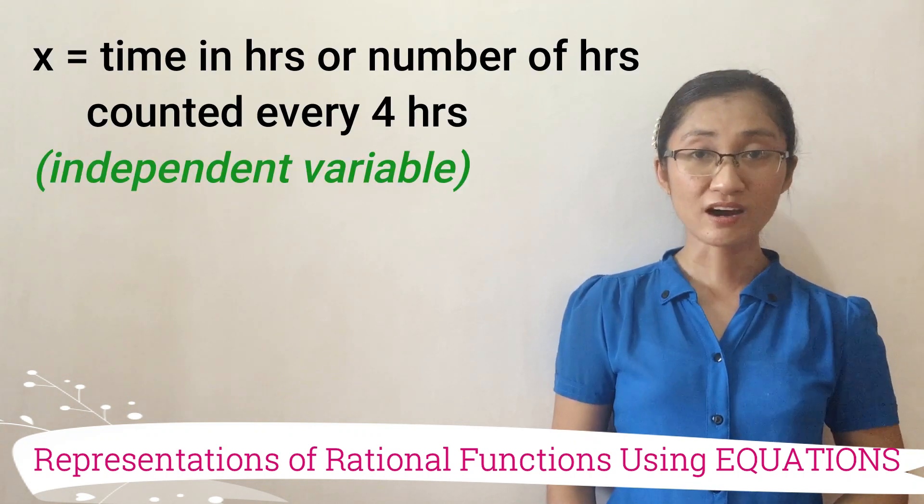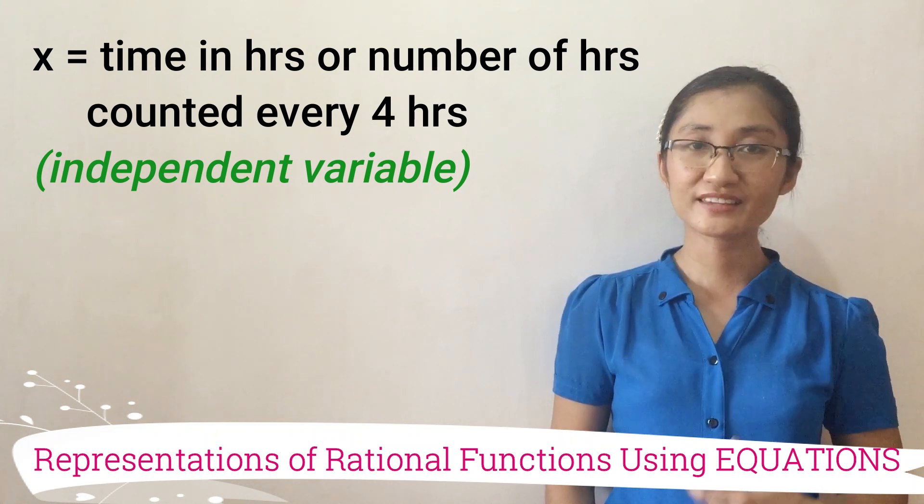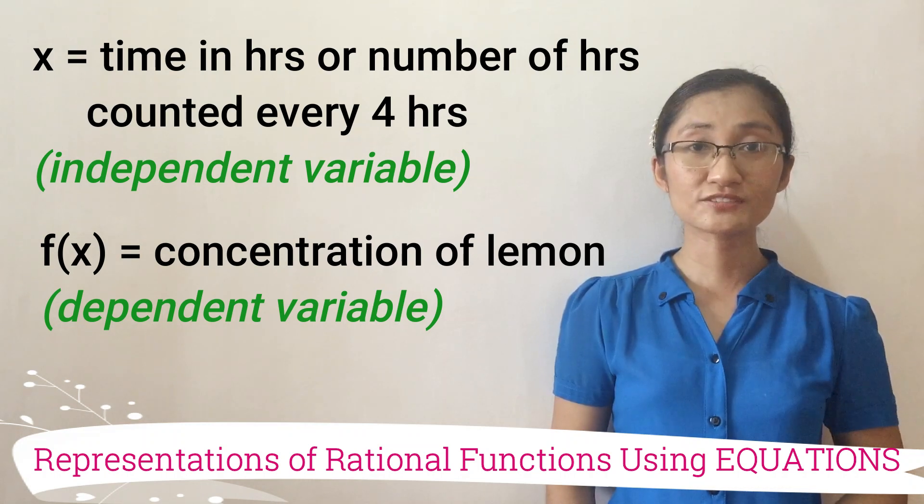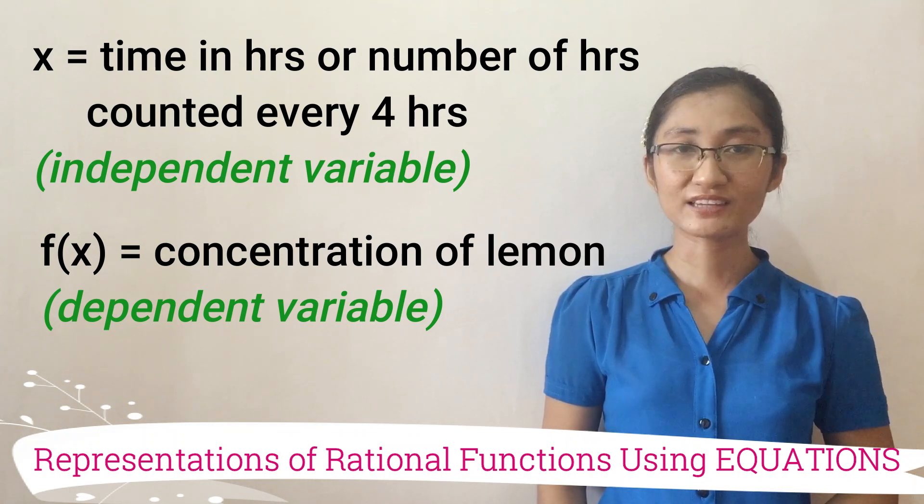Then, x equals time in hours, or number of hours counted every 4 hours. It's the independent variable. While f of x is the concentration of lemon, and that's the dependent variable.